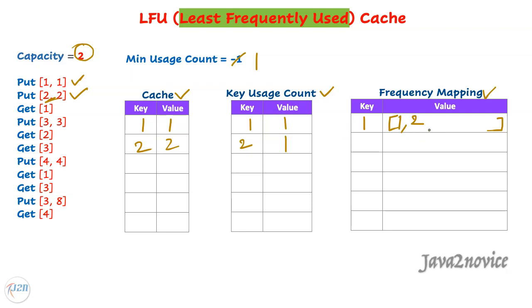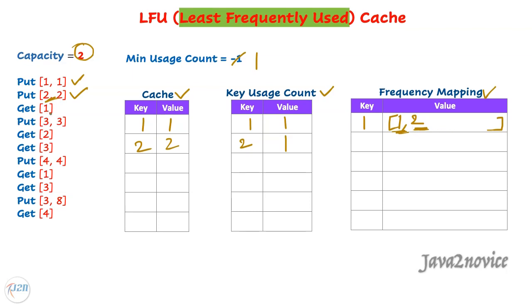The tail always carries the most recently used keys and the head always carries the least recently used keys, so it is always easy to identify which is the least recently used key from this list. The next action is a get call — key one exists in the cache, so we return its value. Before returning the value, we must update usage counts: increment key one's count to two. Since the count became two, we need to maintain a separate list for count two, and then move key one from the count-one list to the count-two list.